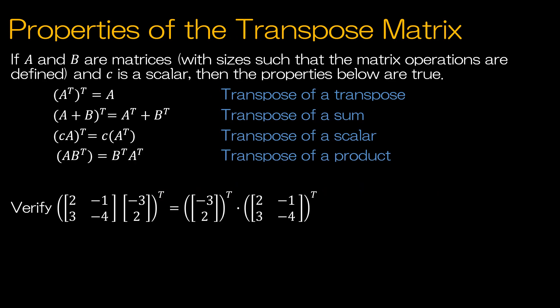Properties of the transpose matrix: if you take the transpose of a transpose, you end up back where you started — they undo each other. You have the transpose of a sum: if you're taking the sum of two matrices and then finding the transpose, you can take the transpose of each first and then add. If you have a scalar C times matrix A and then the transpose, you can take the transpose first and then apply the scalar. And for the transpose of a product: (AB) transpose equals B transpose times A transpose — the order switches.